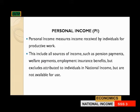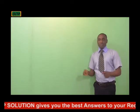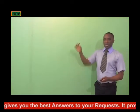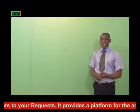The next concept is what we refer to as PI — personal income. Personal income measures the income received by individuals for productive activities that they are involved in. This includes all sources of income such as pension payments, welfare payments, employment, and insurance benefits, but excludes income attributed to individuals in national income that is not available for use. Those ones are excluded.